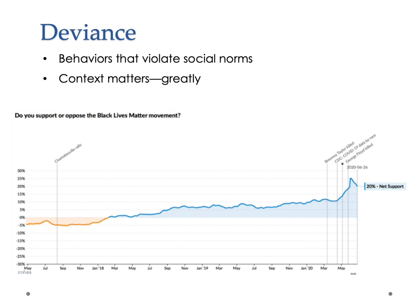I wanted to return to a graph I showed in another one of these lectures, because this gives us a sense of how what constitutes deviant behavior could change over time — meaning the same behavior could at one period in time be read as deviant and at another period of time be read as normative or acceptable. Behaviors that violate social norms may not be constant in our interpretation of them, and context really matters here. There's a series of questions about: do you support the Black Lives Matter movement?